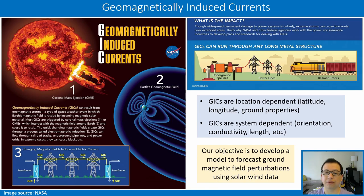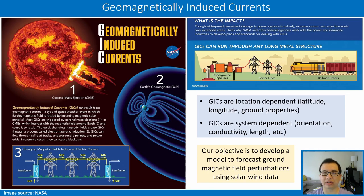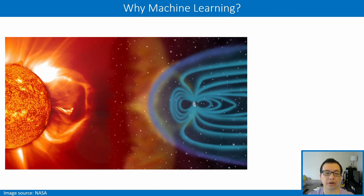Our objective is the forecasting of ground magnetic field perturbations, in particular the horizontal component of the ground magnetic field, which is commonly used as a proxy of GIC occurrence and is a reasonable first step for any GIC model. The modeling of ground magnetic field perturbations is hardly a new topic; this research is inspired by the GEM modeling challenge that took place almost a decade ago and culminated with the evaluation and selection of an operational model.